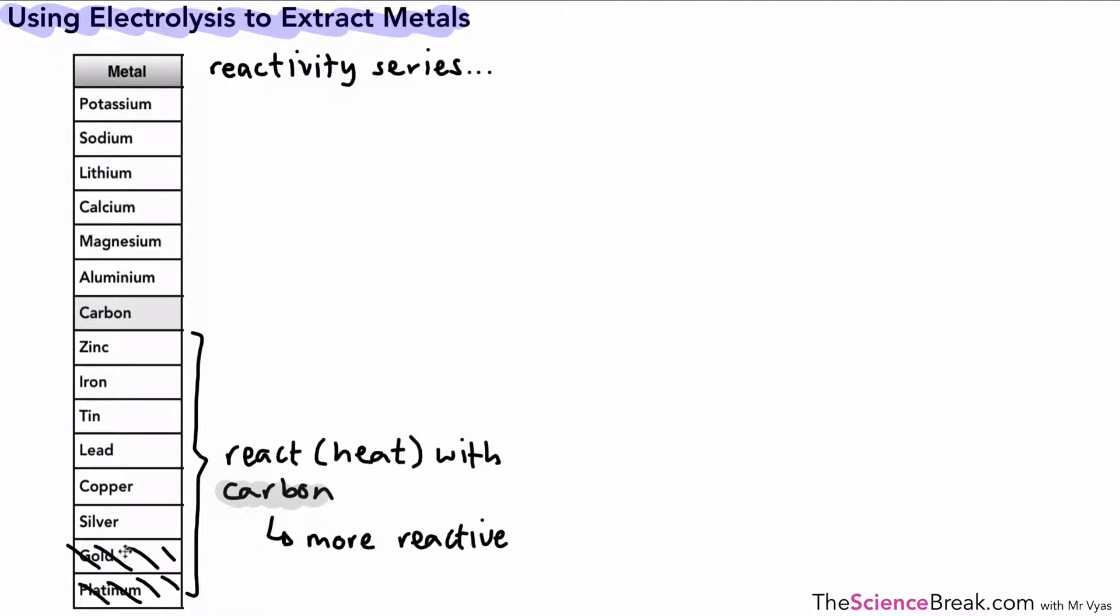Gold and platinum are very unreactive. We don't need to react them with carbon; they're found as they are in the earth. Everything above carbon is more reactive than carbon, so we cannot heat it with carbon in order to extract it. The metals are too reactive and they will hold on to their oxides and therefore not be extracted. So the metal is more reactive than carbon.